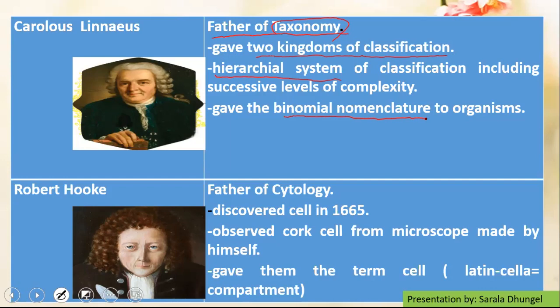Similarly, another contributor is Robert Hooke. He is considered as the father of cytology. He was actually even a friend of Isaac Newton — you might find it interesting to go through his journey along with Newton. He had actually discovered the cell in the year 1665. He observed the cork cell from the microscope made by himself, and he had given the term 'cella' or 'cellula', which means simply the compartment. Because when he observed the cork cell under the microscope, he had actually seen simply the compartments or rooms, and that's why he considered it as 'cella'.